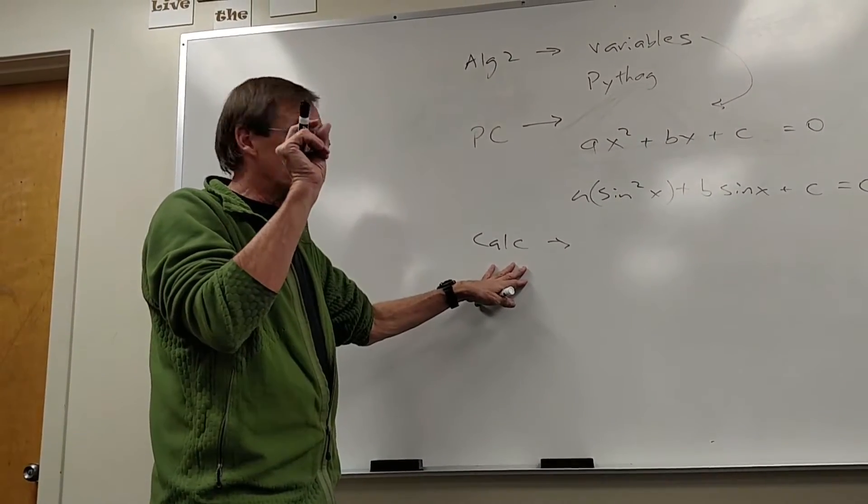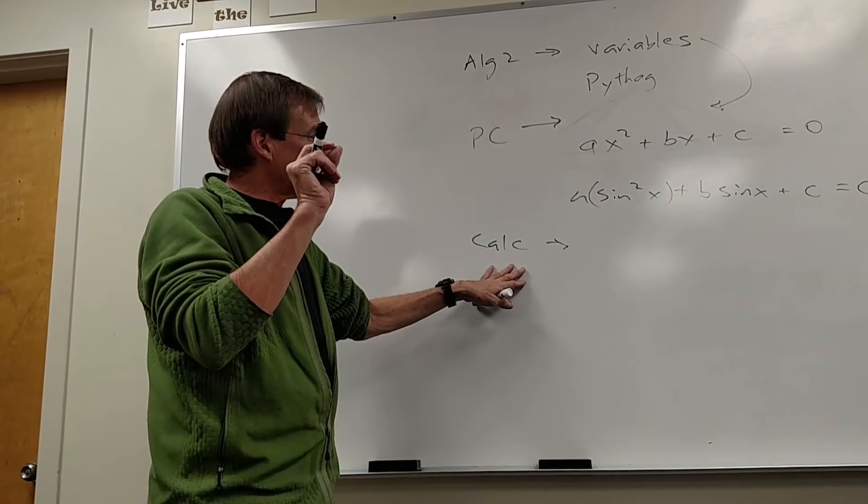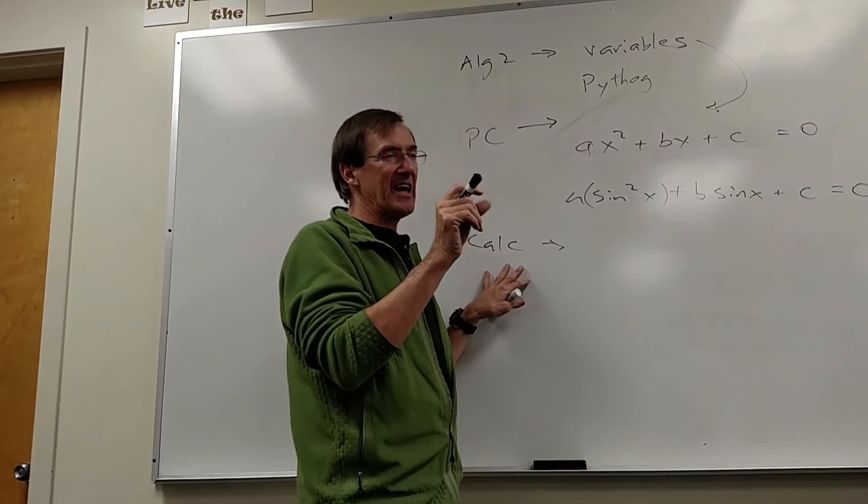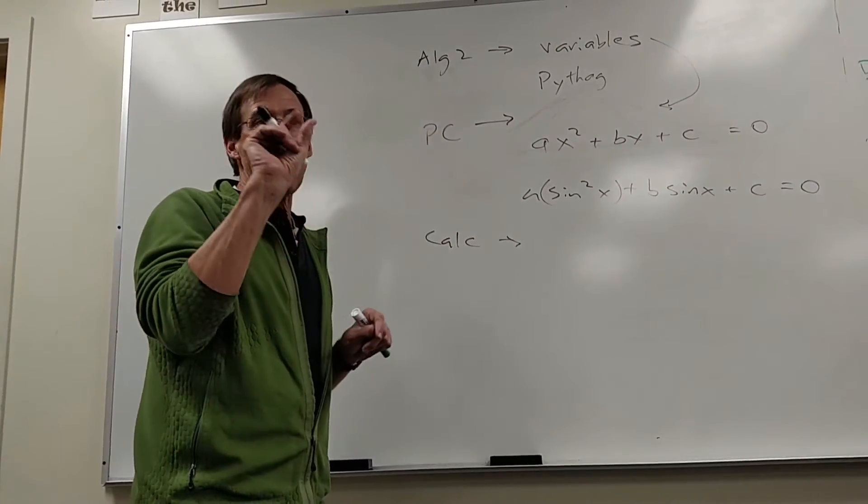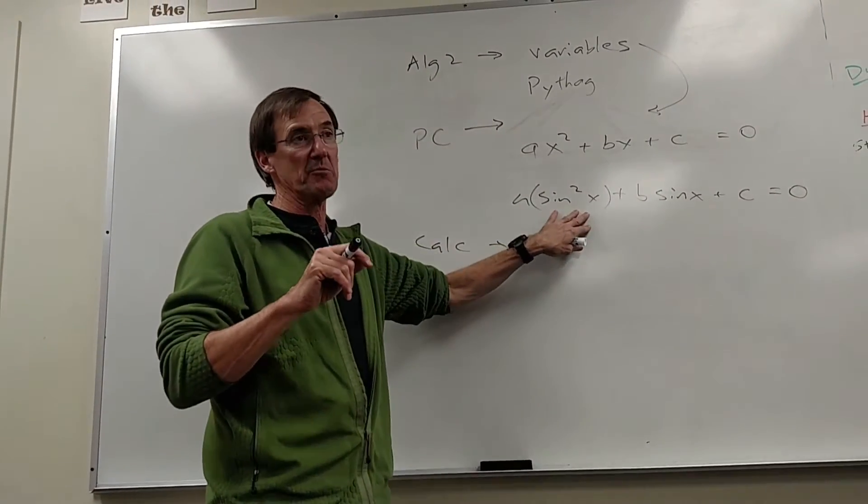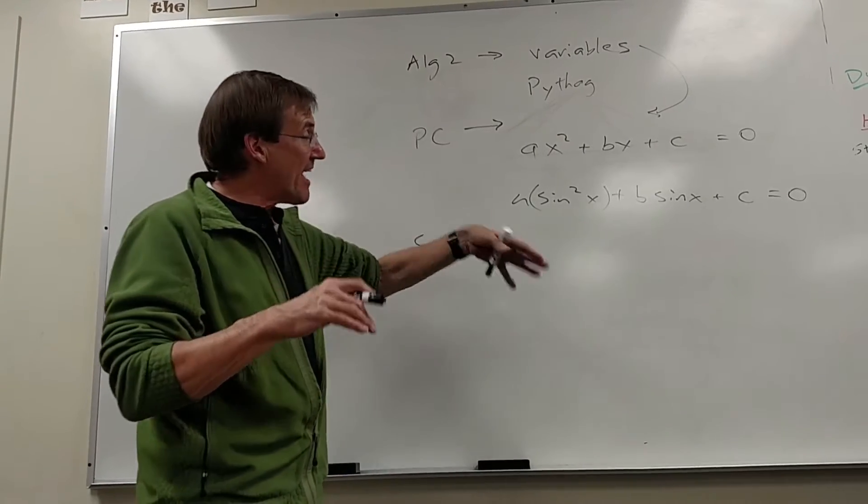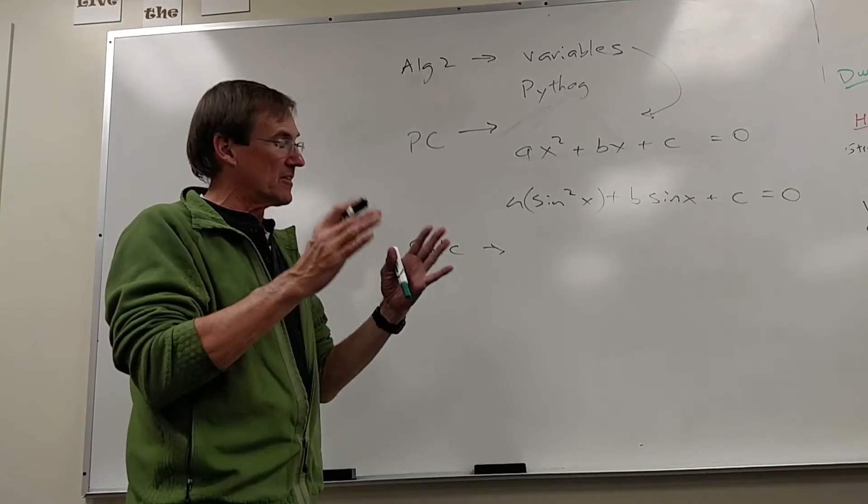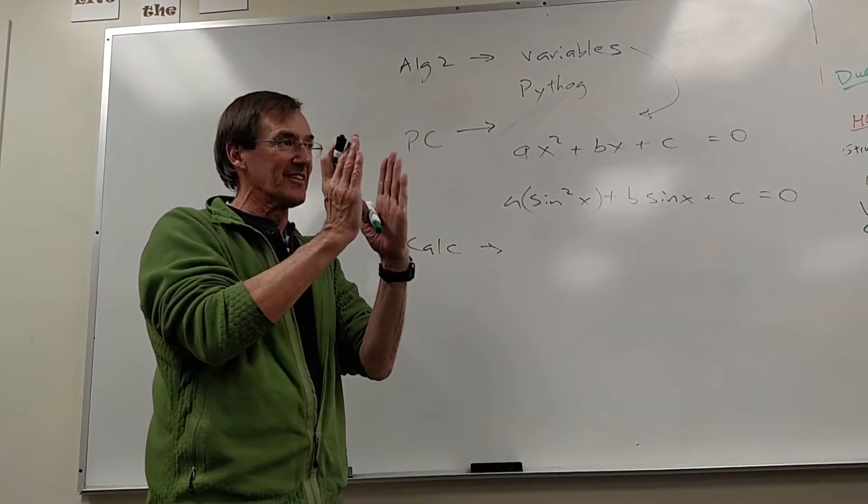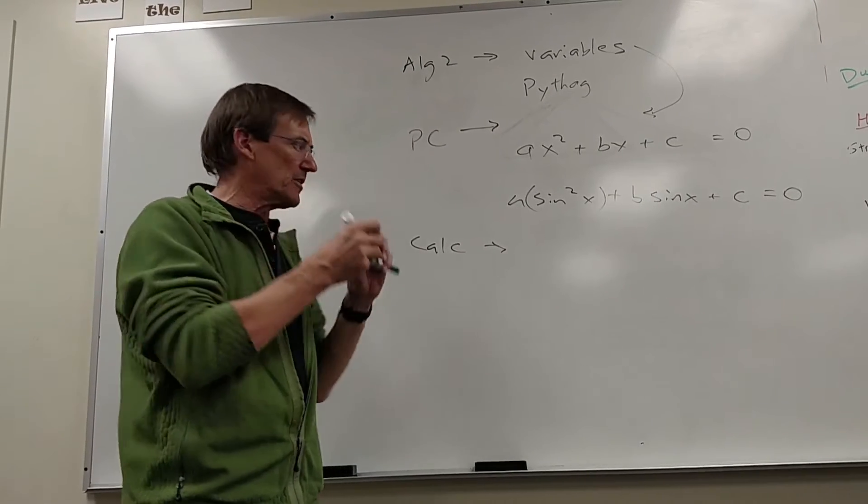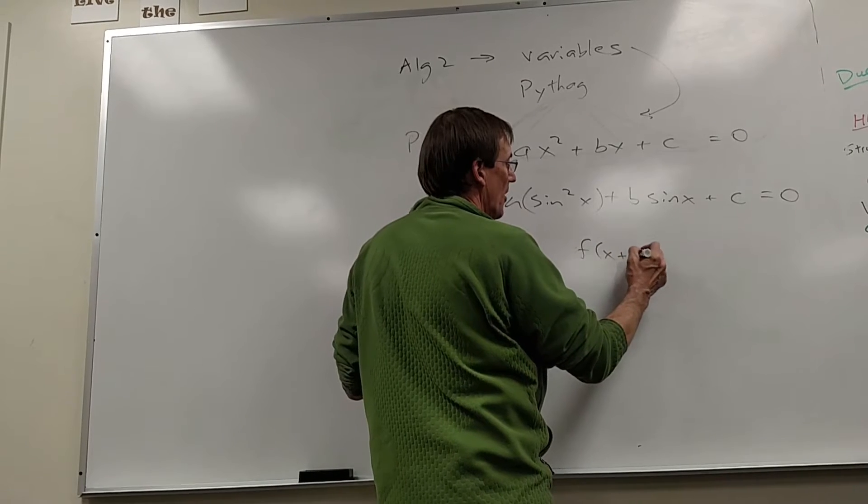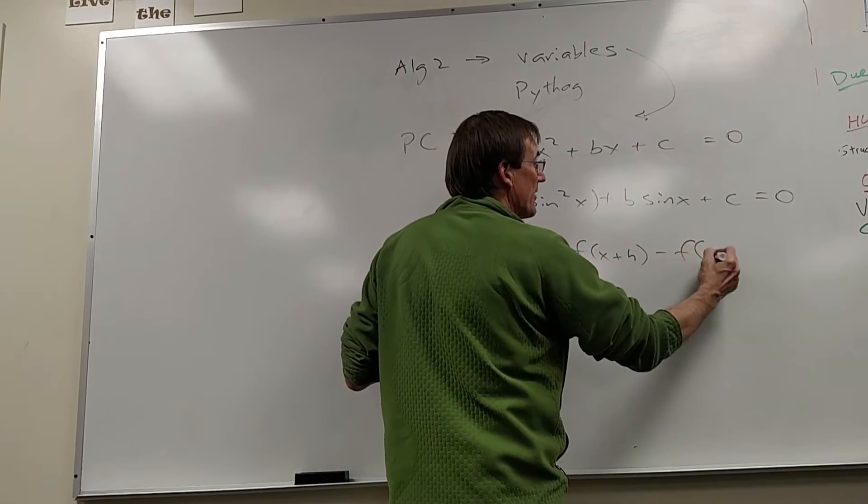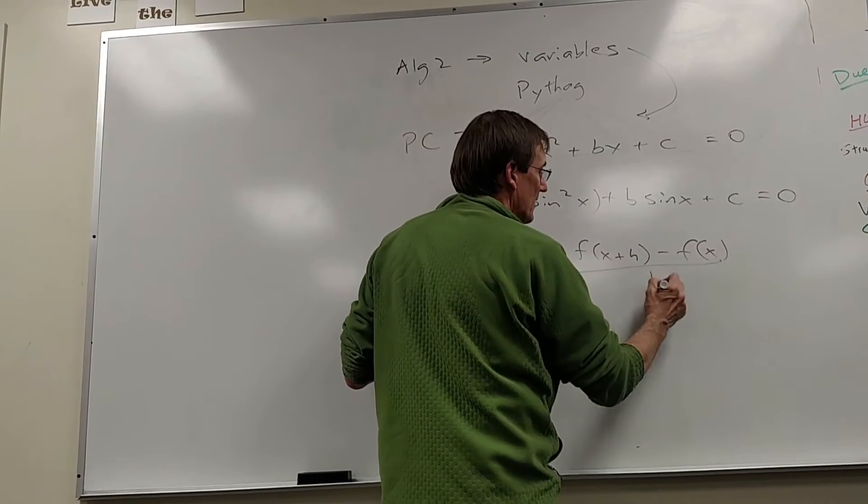We're dealing with probably 95% algebra. But every once in a while we throw in this idea of a limit or what happens as something gets incredibly small or incredibly big. And then we add in to that, we're letting things get infinitely small, and really what happens is the numerator is getting infinitely small and the denominator is getting infinitely small.